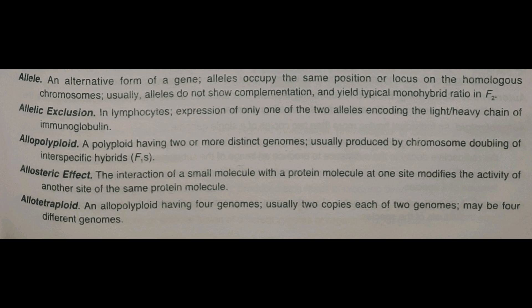Next one is allele exclusion - in lymphocytes, expression of only one of the two alleles encoding the light or heavy chain of the immunoglobulin. Isme ek allele silent ho jata hai, doosra express kar raha hota hai. Yeh role B lymphocyte ke development mein dekha gaya hai.